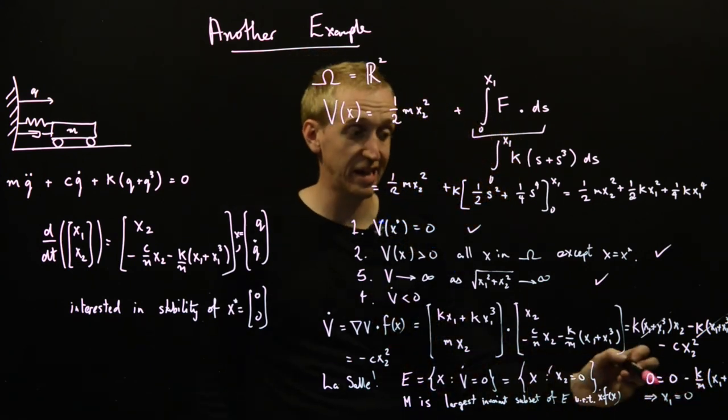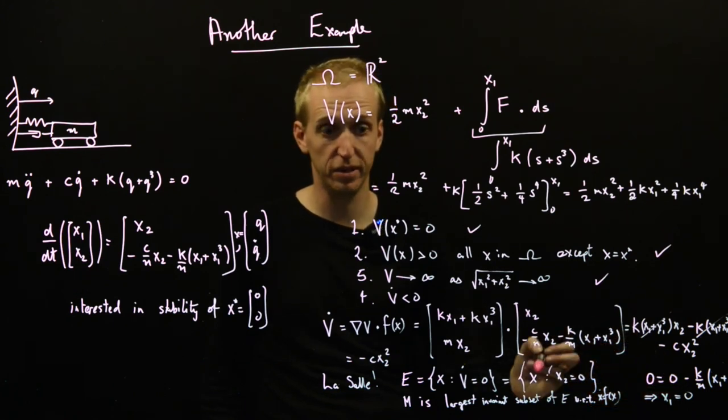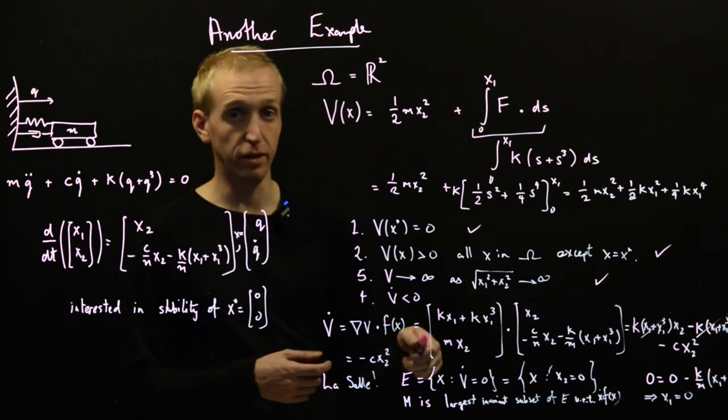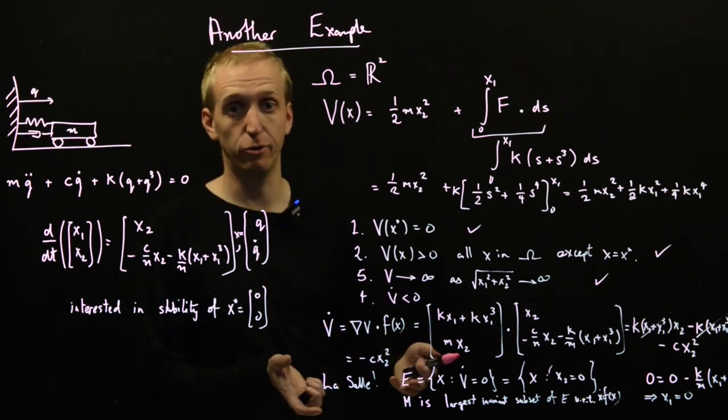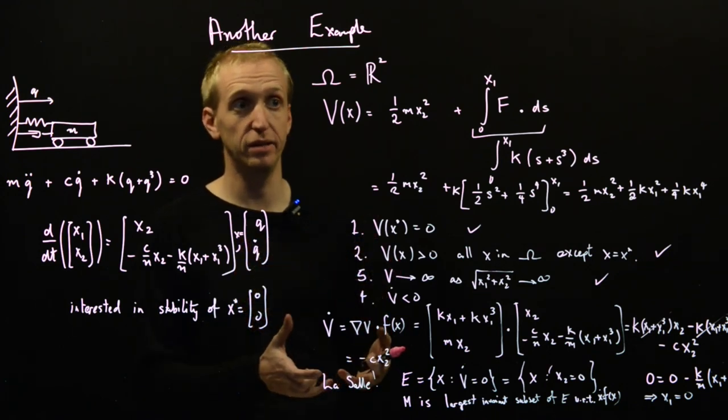So the set M is the point zero, zero. And so by LaSalle, we converge to M, but M is our equilibrium point. So we've proven asymptotic stability. And because we did everything on the entire domain, because we had this property here in our Lyapunov function, we've in fact proved global asymptotic stability.